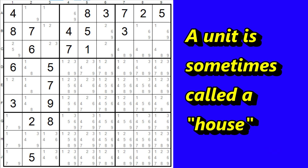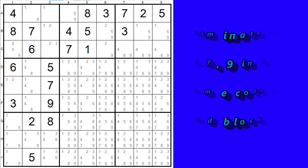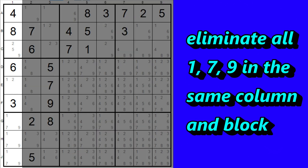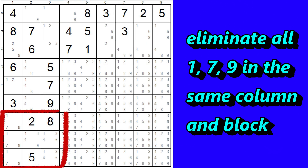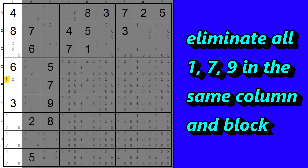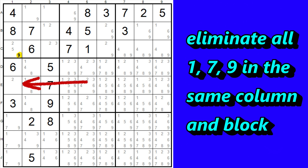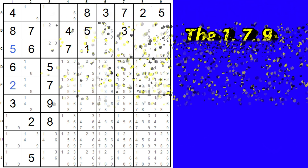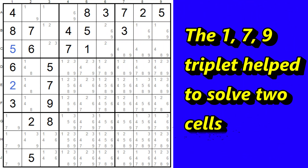Since the one, seven, and nine are in the same column and block, we can eliminate all other ones, sevens, and nines from column one and from block seven. So let's start with column one. We can eliminate this one. There are no sevens, and we can eliminate this nine. So now we know that this cell is a two, and this is then a five. Notice we still don't know which of the three numbers — one, seven, and nine — go into which three cells, but we have now solved two previously unknown cells in column one.